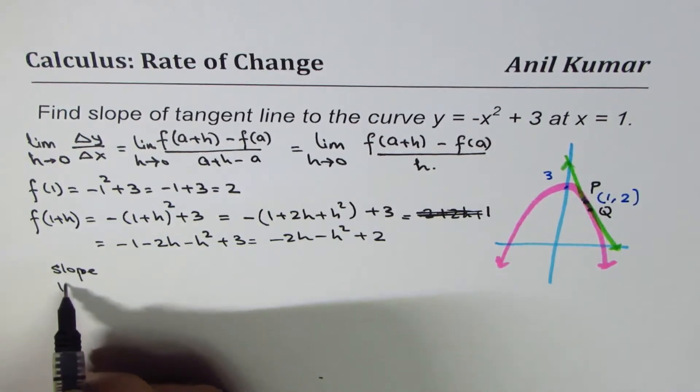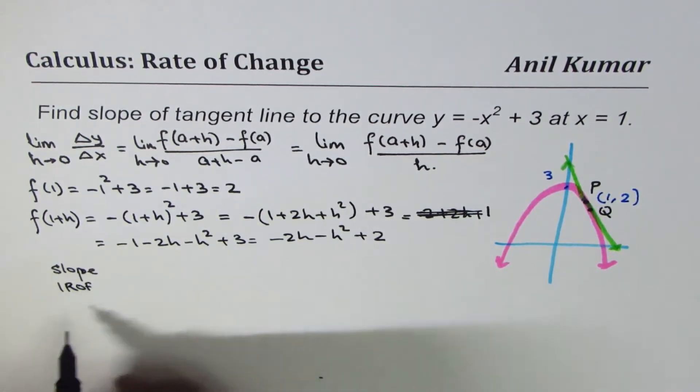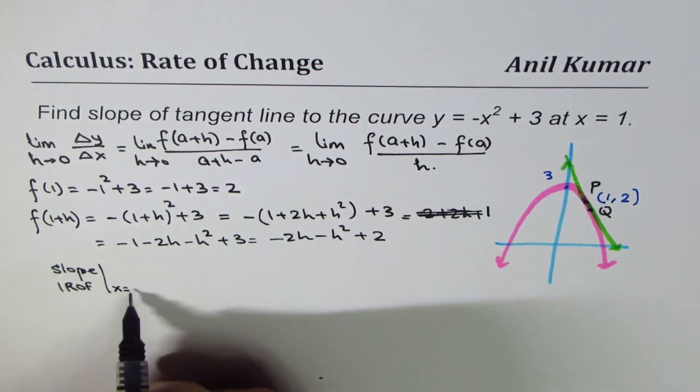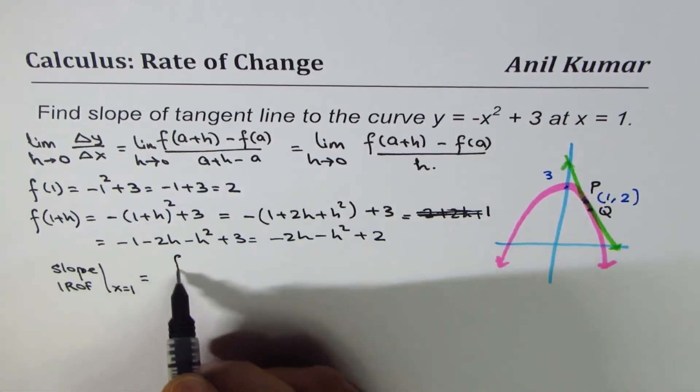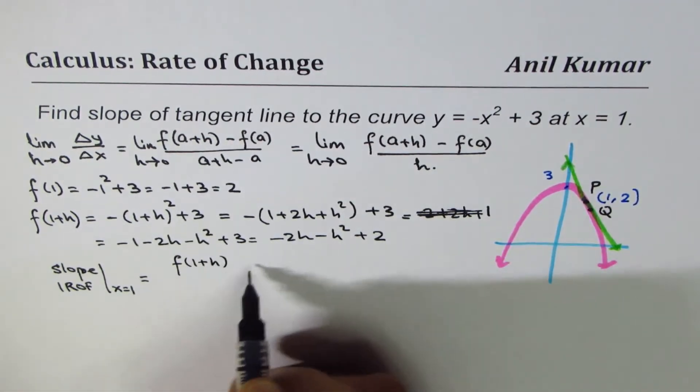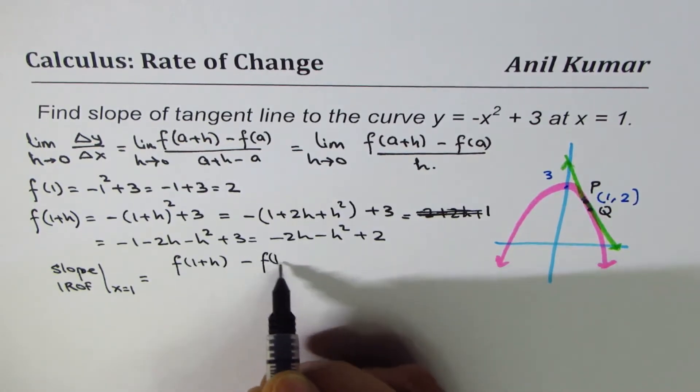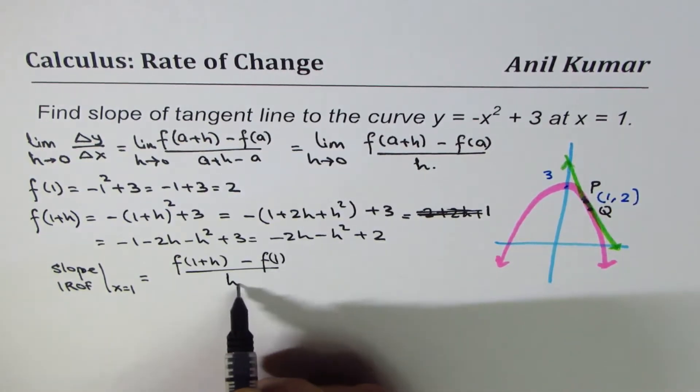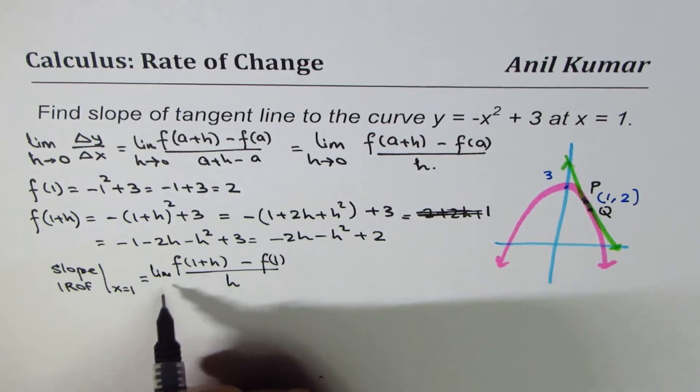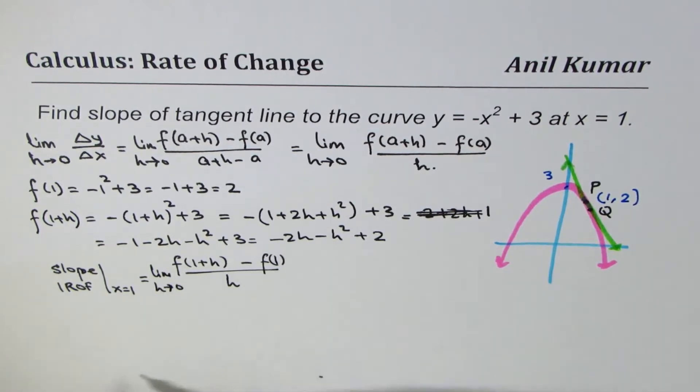So we can also call instantaneous rate of change at x = 1 is equal to [f(1 + h) - f(1)] / h when the limit h approaches 0.